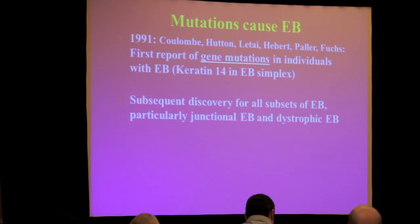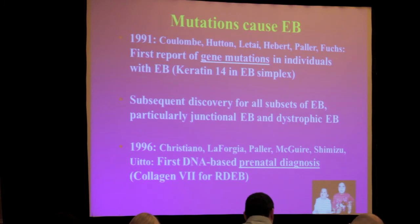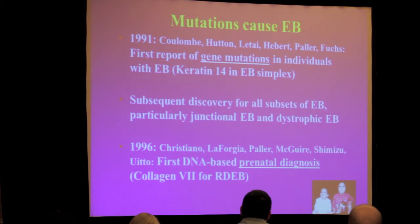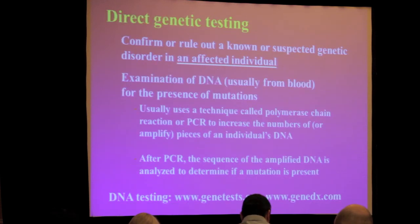Mutations were first found to be causing EB in Laney Fuchs's lab in the early 1990s in families with EB simplex. Subsequently there was a flurry of discovery for all subsets of EB — junctional subtypes, dystrophic subtypes. The first prenatal diagnosis was performed by Angela Cristiano, published in 1996 for recessive dystrophic EB finding collagen 7 mutations. As of 2012, 12 different genes can be mutated and give the variety of different forms of epidermolysis bullosa.